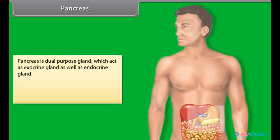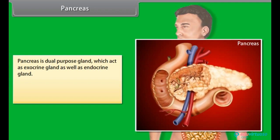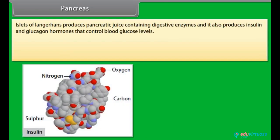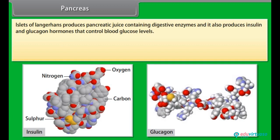The pancreas is a dual-purpose gland, acting as both an exocrine gland and an endocrine gland. The islets of Langerhans are clusters of cells scattered throughout the pancreas. They produce pancreatic juice containing digestive enzymes, and also produce insulin and glucagon hormones that control blood glucose level.